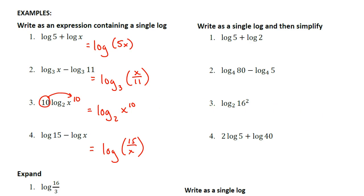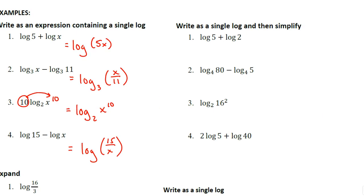Now these say write as a single logarithm and then simplify. If I have log of 5 plus log of 2, using the product rule I'd have log of 5 times 2, which is log of 10. Since it's a common log, we're trying to figure out what exponent we apply to 10 to get exactly 10. That would be 1, and that's your answer.